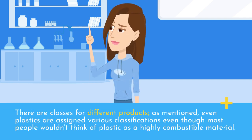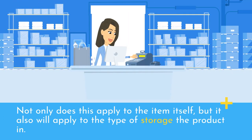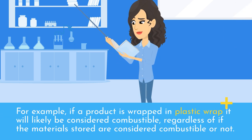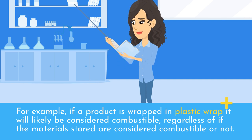There are classes for different products — even plastics are assigned various classifications, even though most people wouldn't think of plastic as a highly combustible material. These classifications are determined by their combustibility. Not only does this apply to the item itself, but it also applies to the type of storage the product is in. For example, if a product is wrapped in plastic wrap, it will likely be considered combustible regardless of whether the materials stored inside are considered combustible or not.